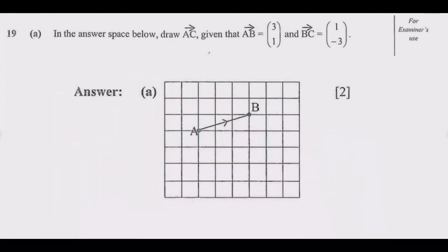Let us look at question 19. Question 19A: In the answer space below draw vector AC given that vector AB equals (3, 1), which is a column vector, and BC equals (1, -3).